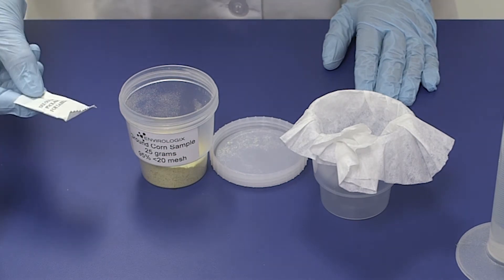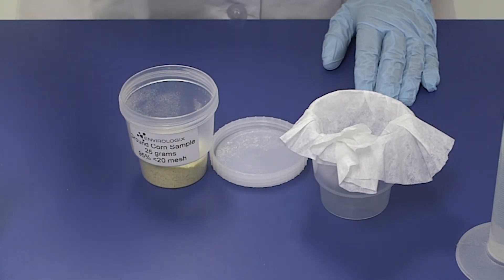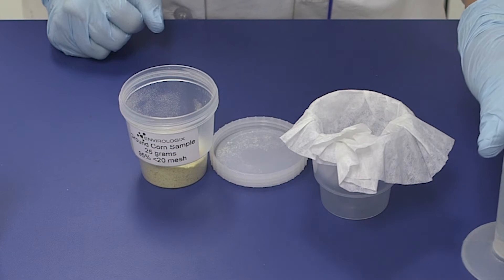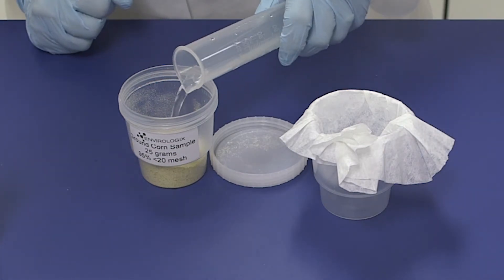Add one EB-17 pouch to the cup. Add 75 milliliters of deionized, bottled, or distilled water to the container.